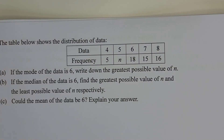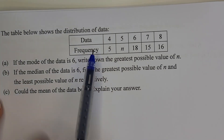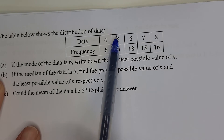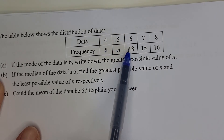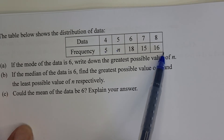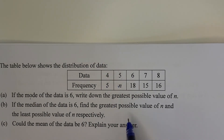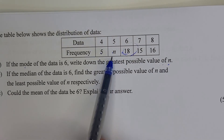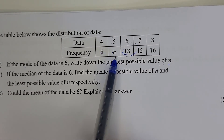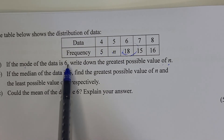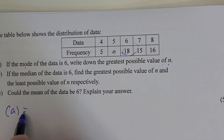Question number eight: reading the stem-and-leaf diagram — there are 5 fours, n fives, 18 sixes, 15 sevens, and 16 eights. Part a: suppose the mode of the data is 6, find the greatest possible value of n. The greatest frequency is 18, so n cannot equal 18 (that would make 5 and 6 both modes) and n cannot exceed 18. Therefore the greatest possible value of n is 17.